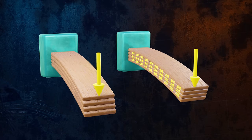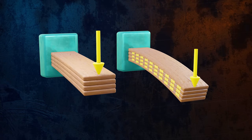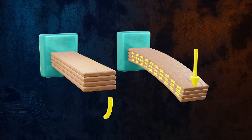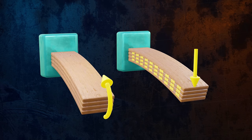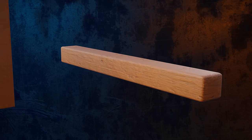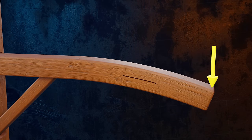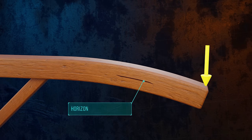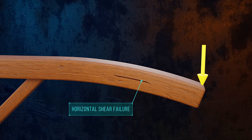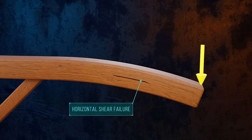These horizontal shear stresses don't exist if we apply a moment instead of a force, because that gives us a state of pure bending, and so there is no tendency for the planks to slide relative to one another. The presence of these horizontal shear stresses explains why wooden beams sometimes fail by splitting longitudinally. This failure usually occurs close to the neutral axis.